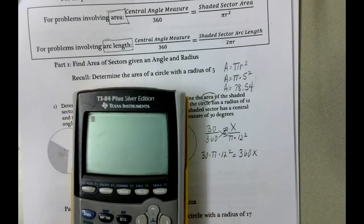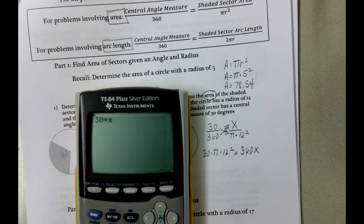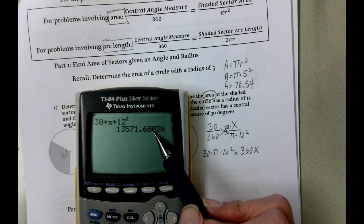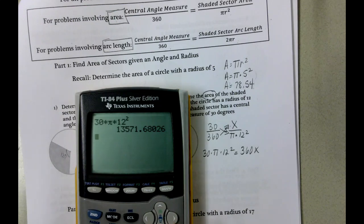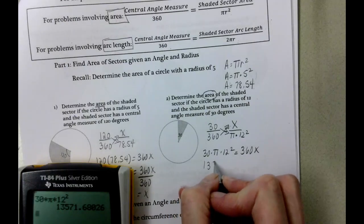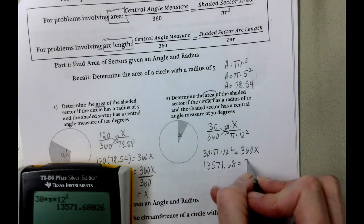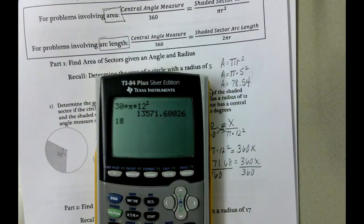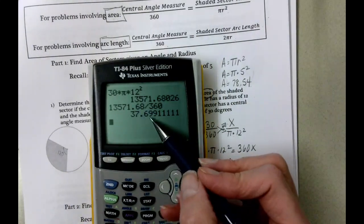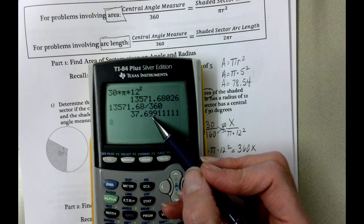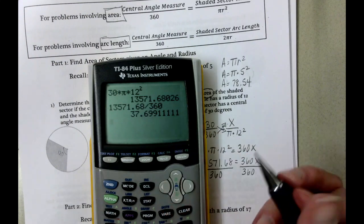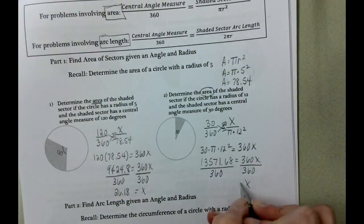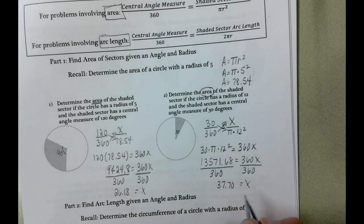So let's type that in. 30 times π times 12 squared. That gives us 13,571.680. We look at the zero to determine what to do to the eight. We're going to leave the eight as is because zero is less than five. So we get 13,571.68 equals 360x. And we'll divide both sides by 360. And we end up with 37.699. Because this nine is five or higher, we have to round this up to a zero, which rounds this up to 70. So it's going to be 37.70 when we round. 37.70, that is our area of our shaded sector.